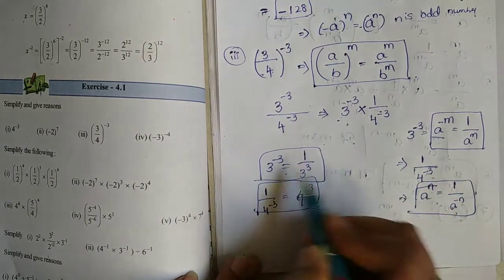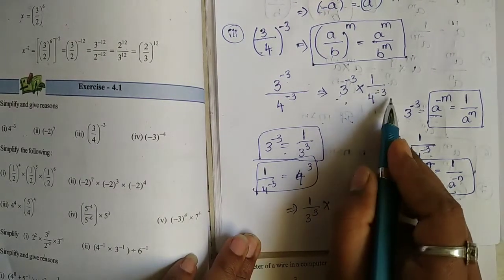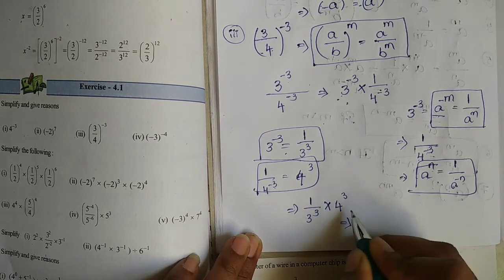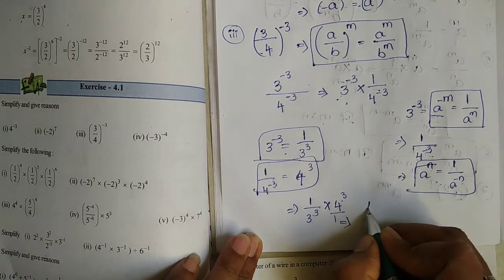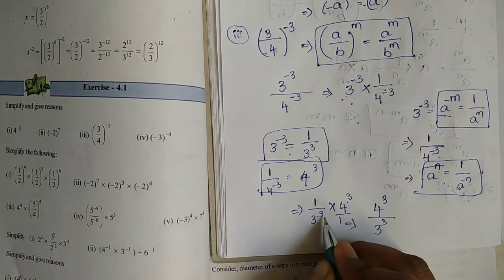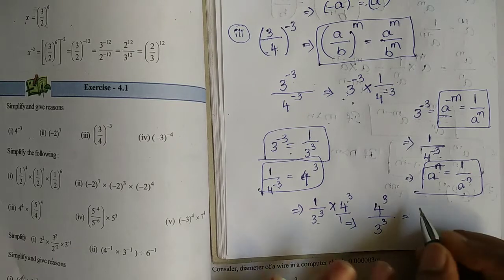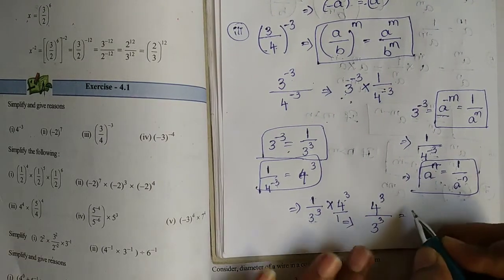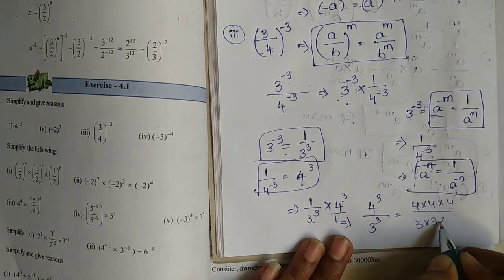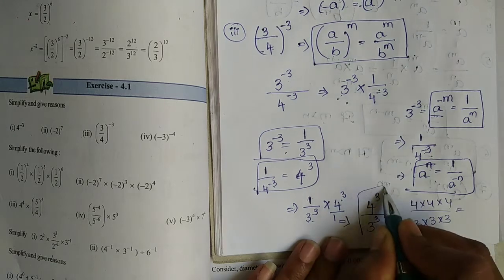So the value is 1 by 3 to the power of 3 into 4 to the power of 3. Numerator into numerator and denominator into denominator: 4 cube by 3 cube, which is 4 into 4 into 4 by 3 into 3 into 3. We then do the expansion.